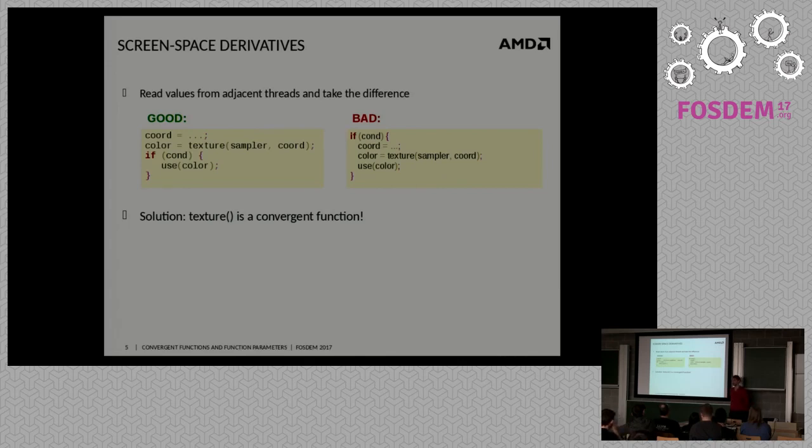Because the way that derivatives are approximated in practice is that you look at the corresponding value of the thread that computes a neighboring pixel. Now, if the neighboring pixel happens to not go down the true path, it doesn't compute the coordinate in the right fragment, and you're getting an undefined value. So we need to teach LLVM not to do this kind of transform, and we can actually also do this by marking the texture intrinsic as a convergent function.